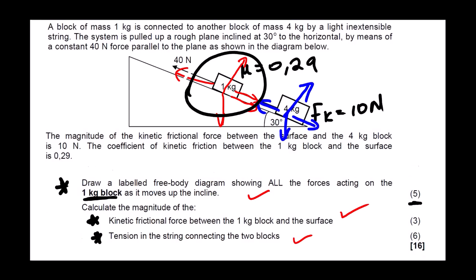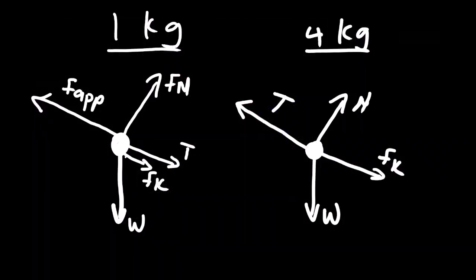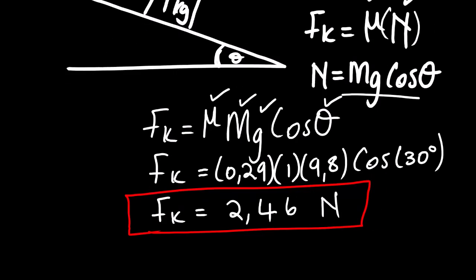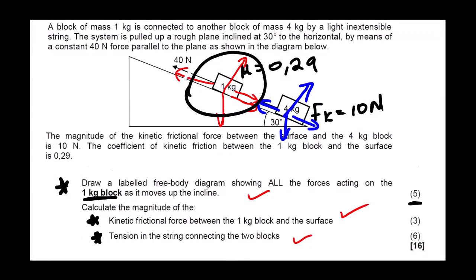Before we move on, let us look at how we are going to allocate marks — one mark for each force. For the calculation, the mark allocation covers the substitution and the answer. Our next question asks us to calculate the magnitude of the tension in the string connecting the two blocks. The mark allocation is 6 marks, so this calculation will be a bit long, but there is nothing difficult.